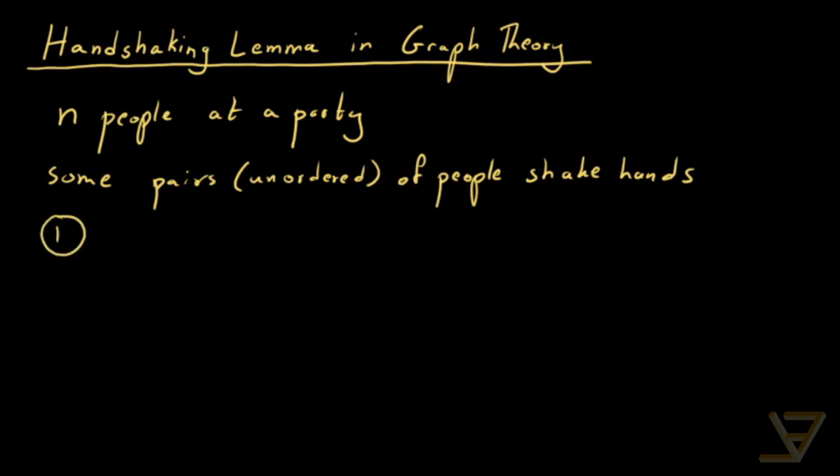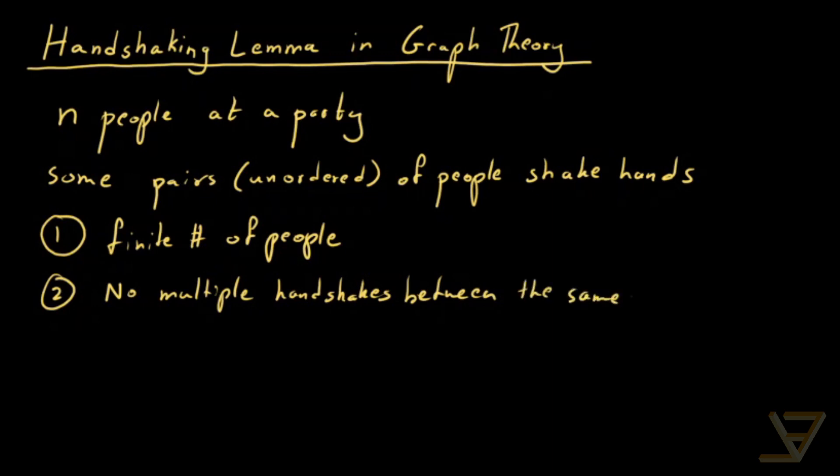First of all, there's a finite number of people. Secondly, there's no multiple handshakes between people—no multiple handshakes between the same pair. So if one pair shakes hands once, that's it. They don't shake hands again, which makes sense because the same two people, unless there's a mistake, wouldn't shake hands with each other again.